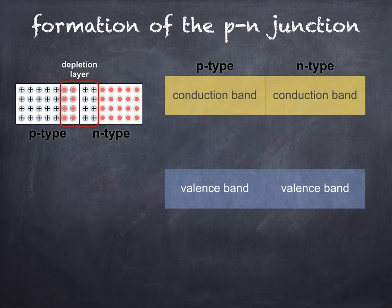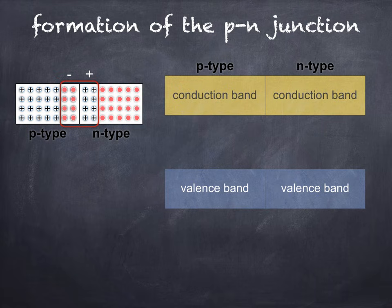The depletion layer is effectively an insulator due to the lack of majority charge carriers within it. The P-type region within the depletion layer now has a net negative charge due to the electrons diffusing into it from the N-type material. Similarly, the N-type region has a net positive charge due to the holes diffusing into it from the P-type material.